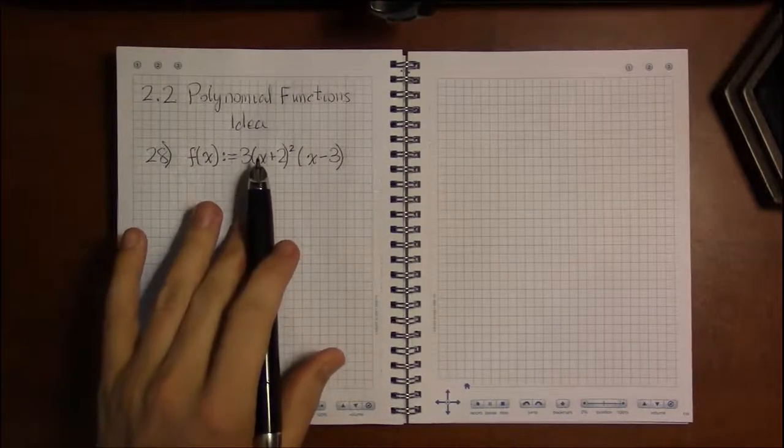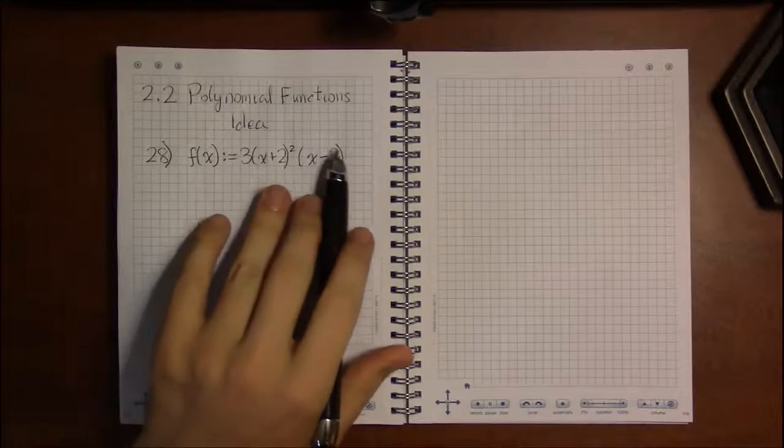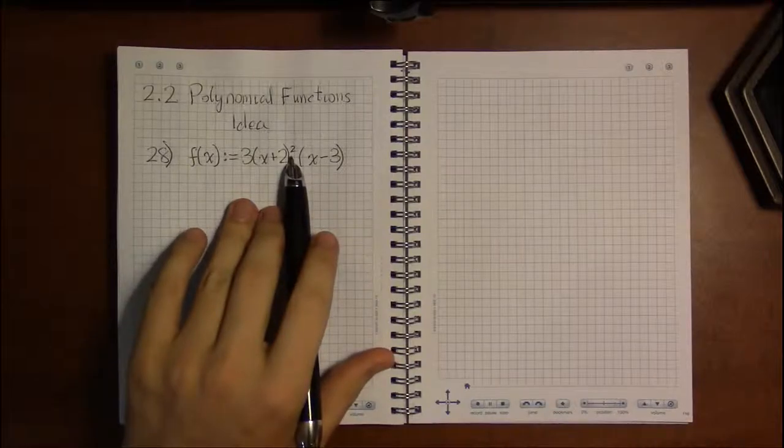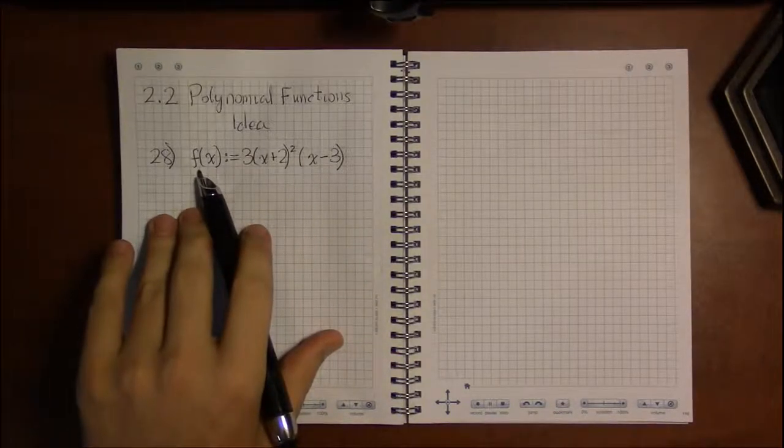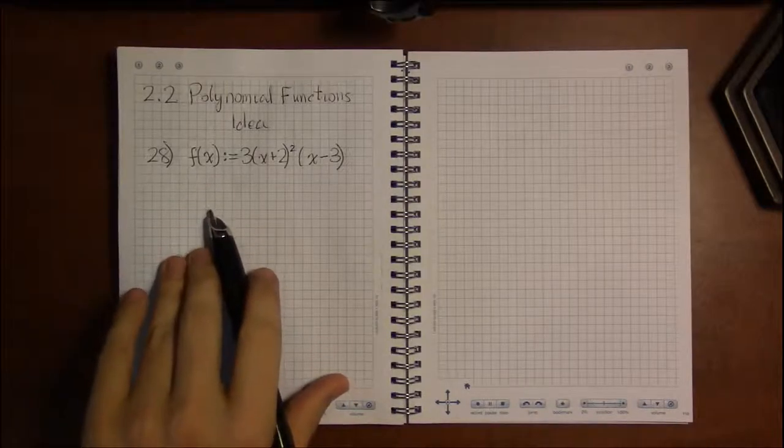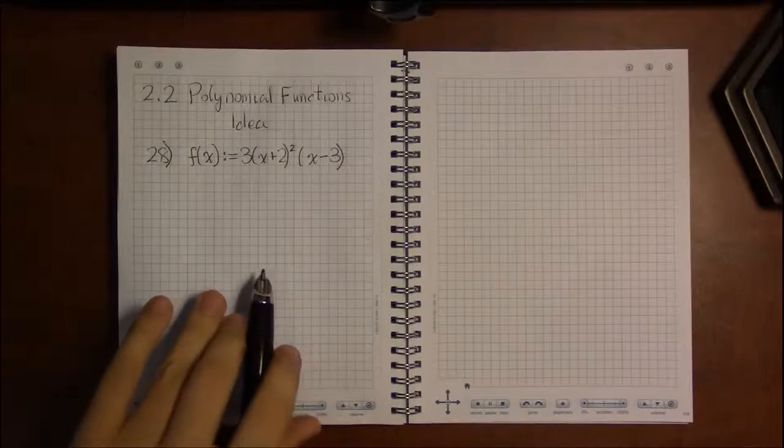The last idea I want to talk about is connecting the multiplicity of all the x-intercepts with the degree of the polynomial and with this new thing called the number of turning points of the polynomial.